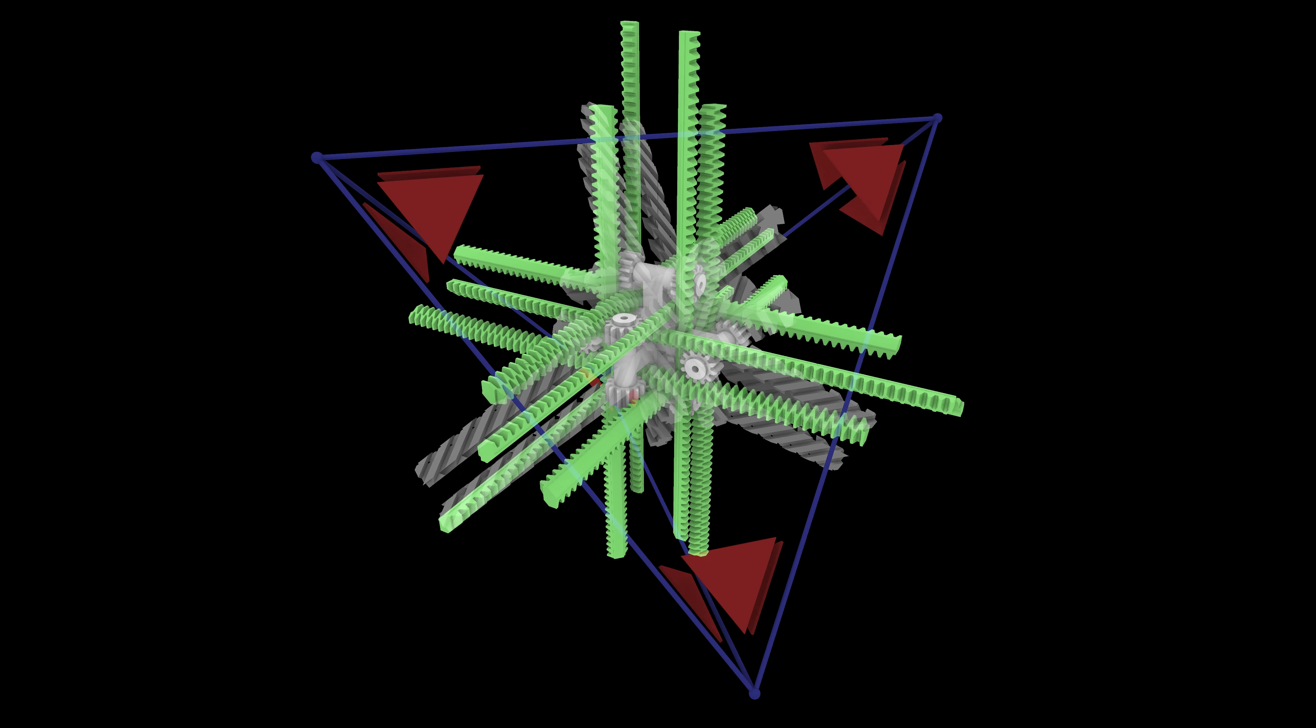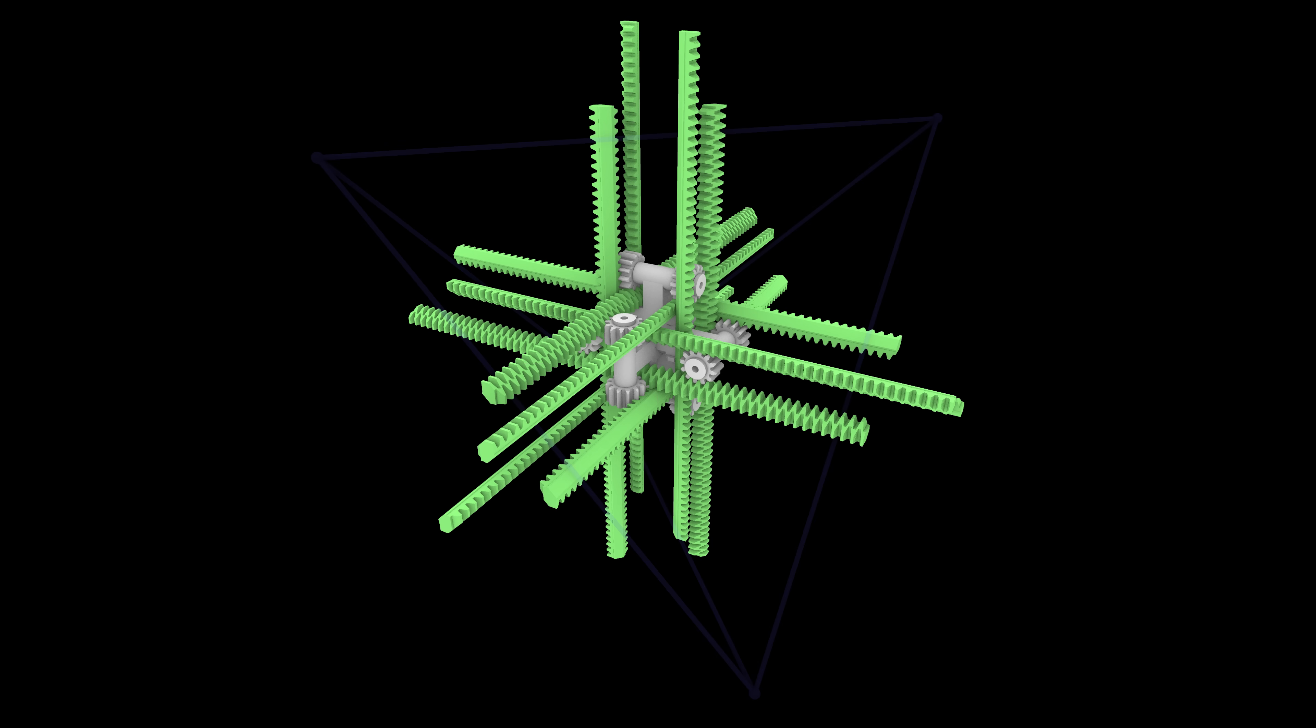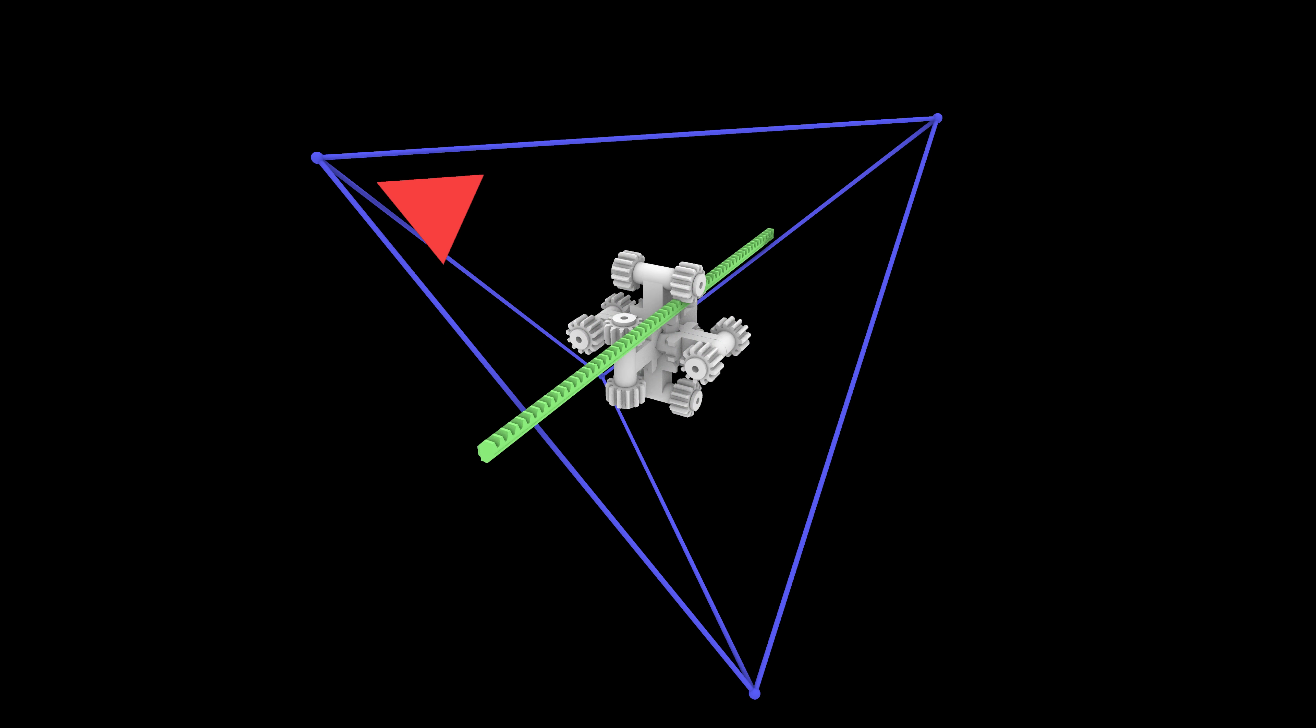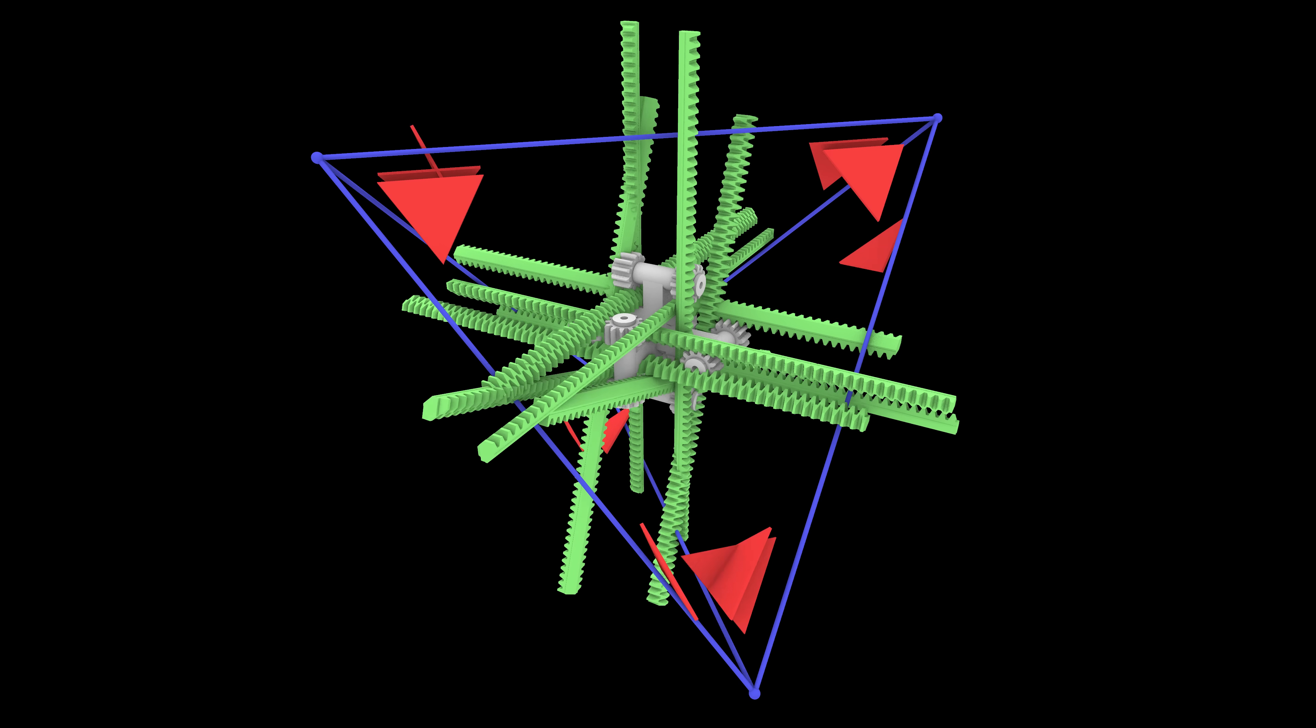Maybe surprisingly, six-axis racks has exactly the same tetrahedral symmetry. Again, let's put a tetrahedron around it. Now let's match up this corner of this triangle of the tetrahedron with this stick. Again, rotating the sticks around in the same way as we rotate the corners around to get the tetrahedron gives back all the sticks of the six-axis racks mechanism.